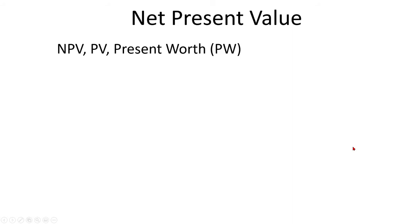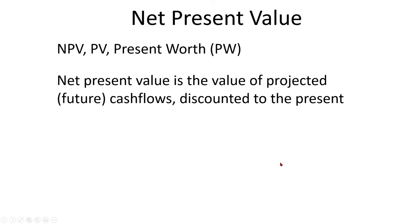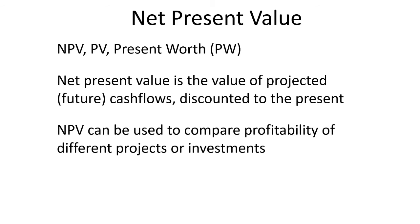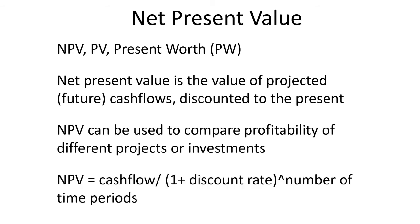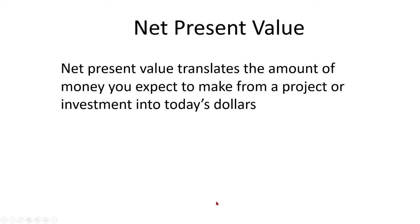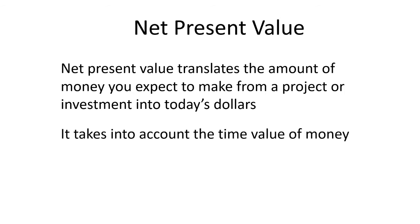What is net present value? Net present value, NPV, present worth, PW — it's all the same terminology, interchangeable. Net present value is the value of projected or future cash flows discounted to the present day. We can use net present value to compare the profitability of different projects or investments. The formula is: take the cash flow of each period, divide it by one plus the discount rate raised to the number of time periods, and sum up all the cash flows. Net present value translates the amount of money you expect to make from a project into today's dollars, taking into account the time value of money.